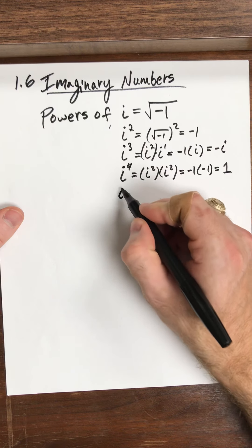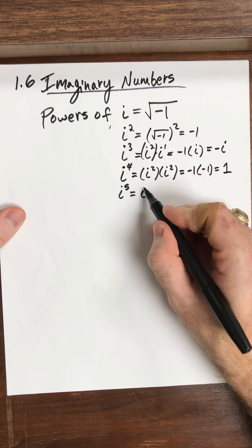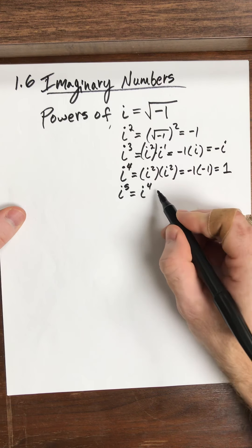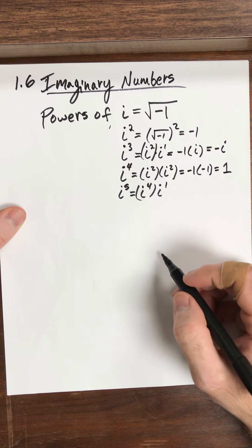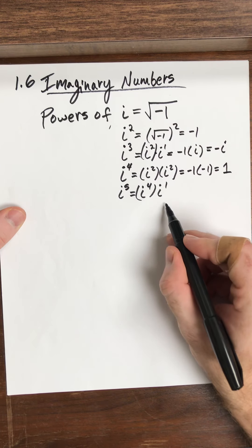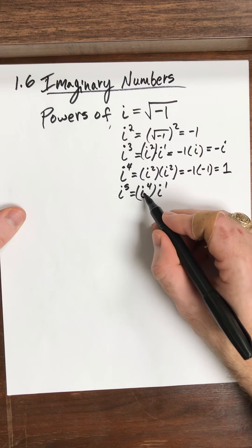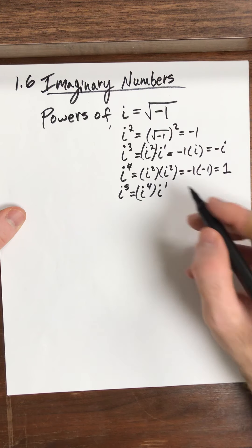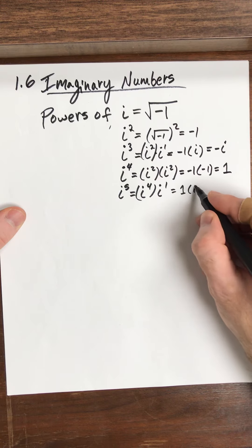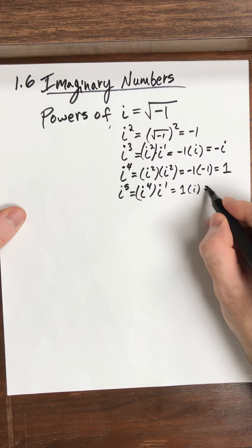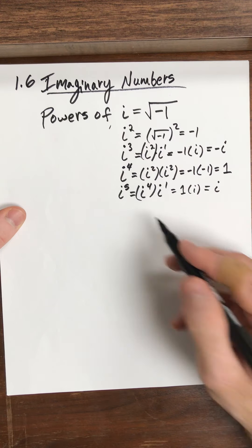Now, if I try i to the 5, what's going on here? This is really i to the fourth times i to the 1. Four i's here, one i here, that's 5 total. So i to the fourth, what do we know that equals? That actually equals 1. So i to the fourth is just 1, and then I have i. So i times 1, this is i. Huh. Look at that. I'm right back to i again here.